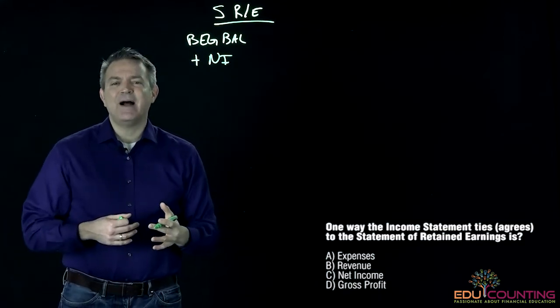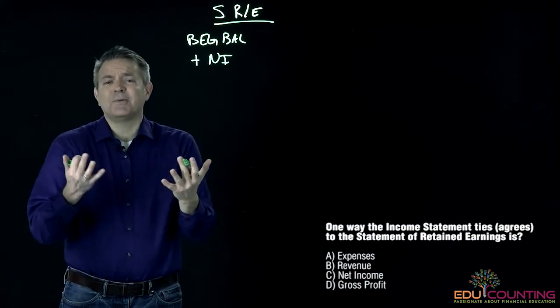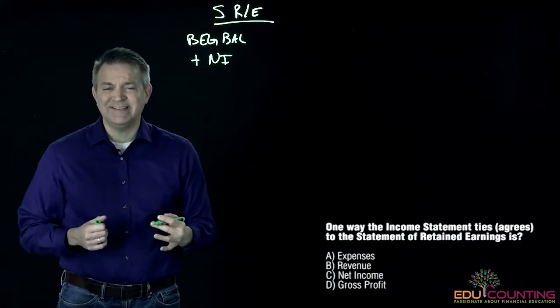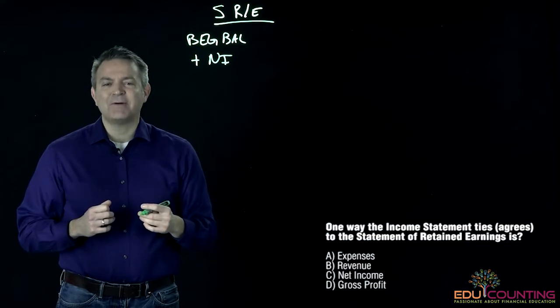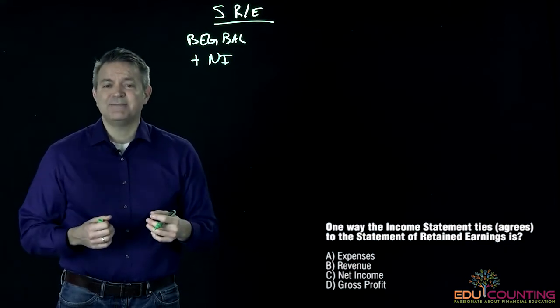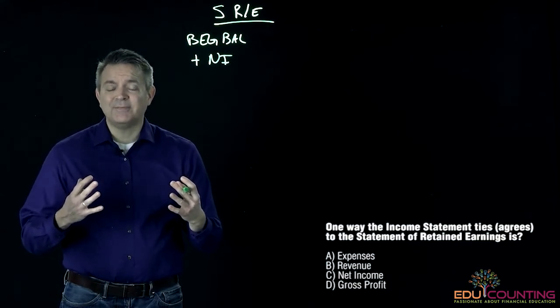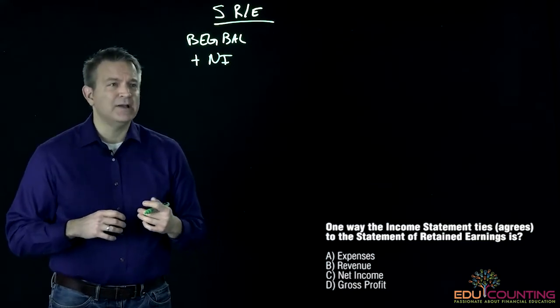Net income is the additional amount that we make throughout the year, because we're going to retain it or pay it out in dividends. That increases our equity section. The shareholders like when the company makes money and their equity increases if they don't pay it all out. That's what we call retained earnings.